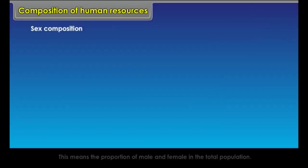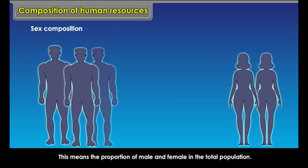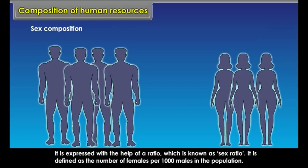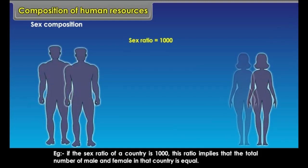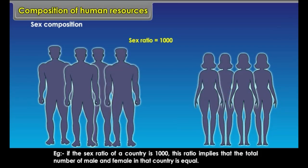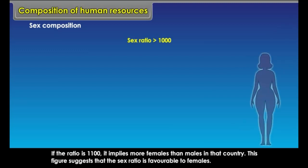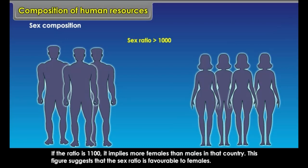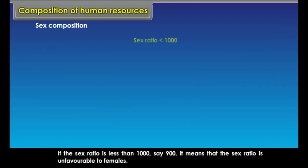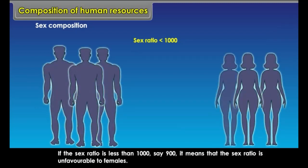Sex Composition: This means the proportion of male and female in the total population. It is expressed with the help of a ratio known as sex ratio, defined as the number of females per thousand males in the population. If the sex ratio is 1000, the total number of males and females is equal. If the ratio is 1100, it implies more females than males, which is favourable to females. If the sex ratio is less than 1000, say 900, it is unfavourable to females.